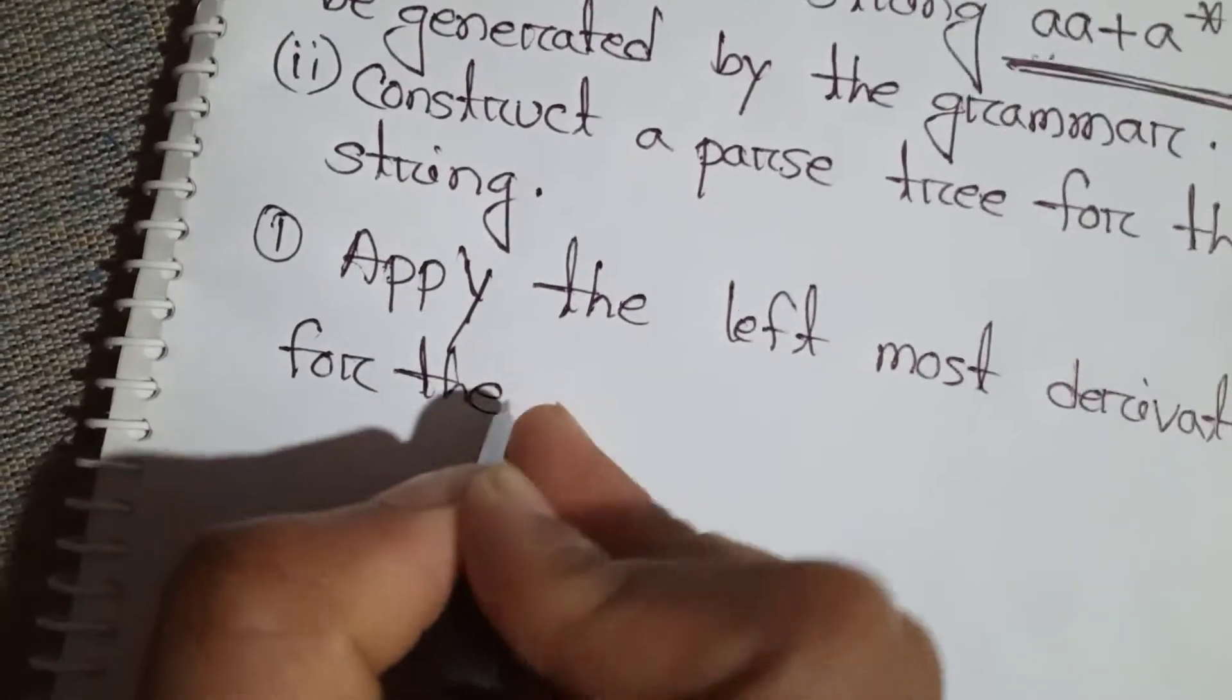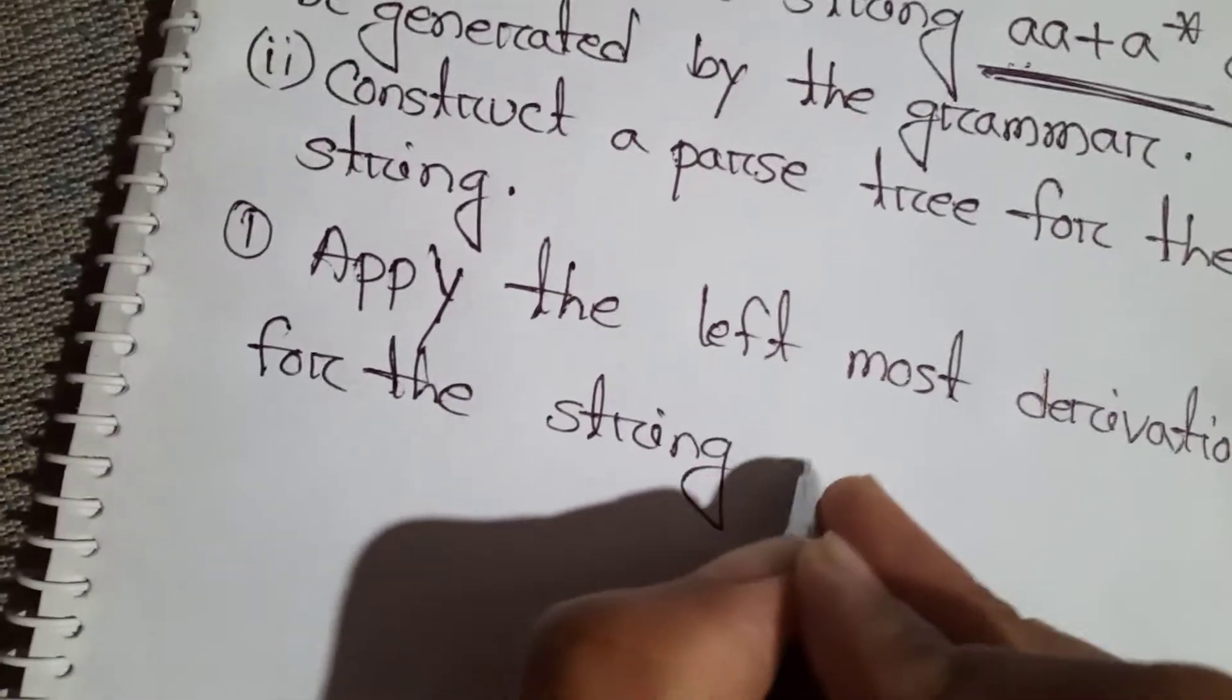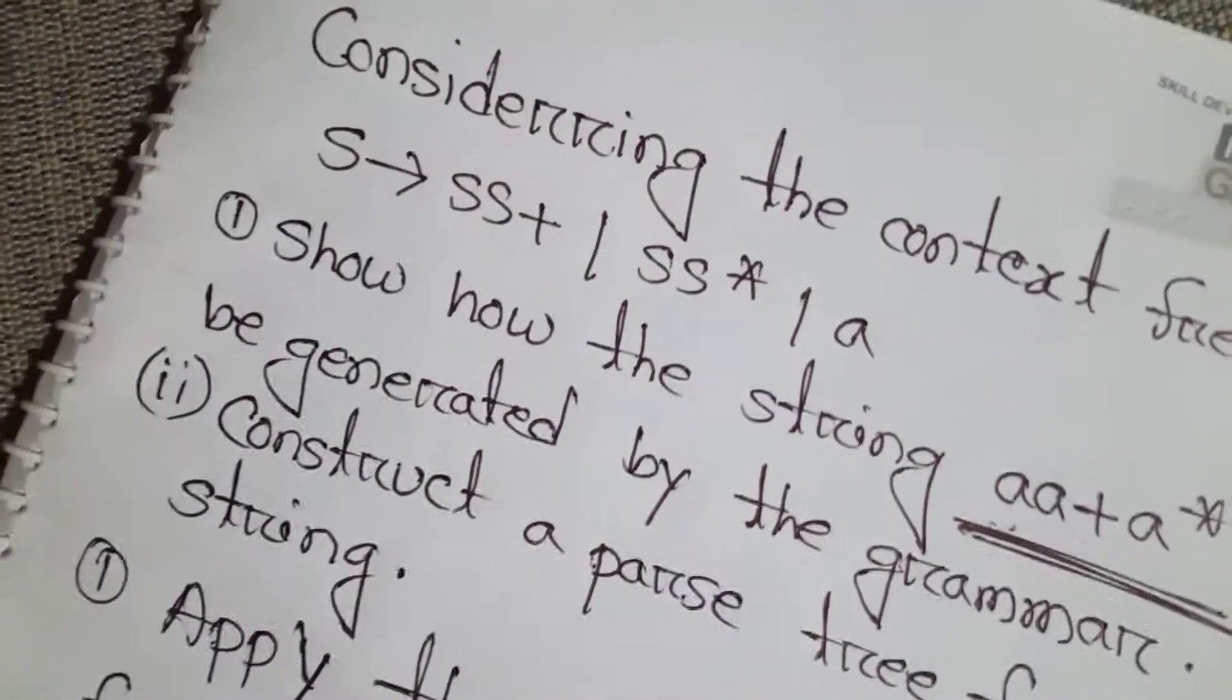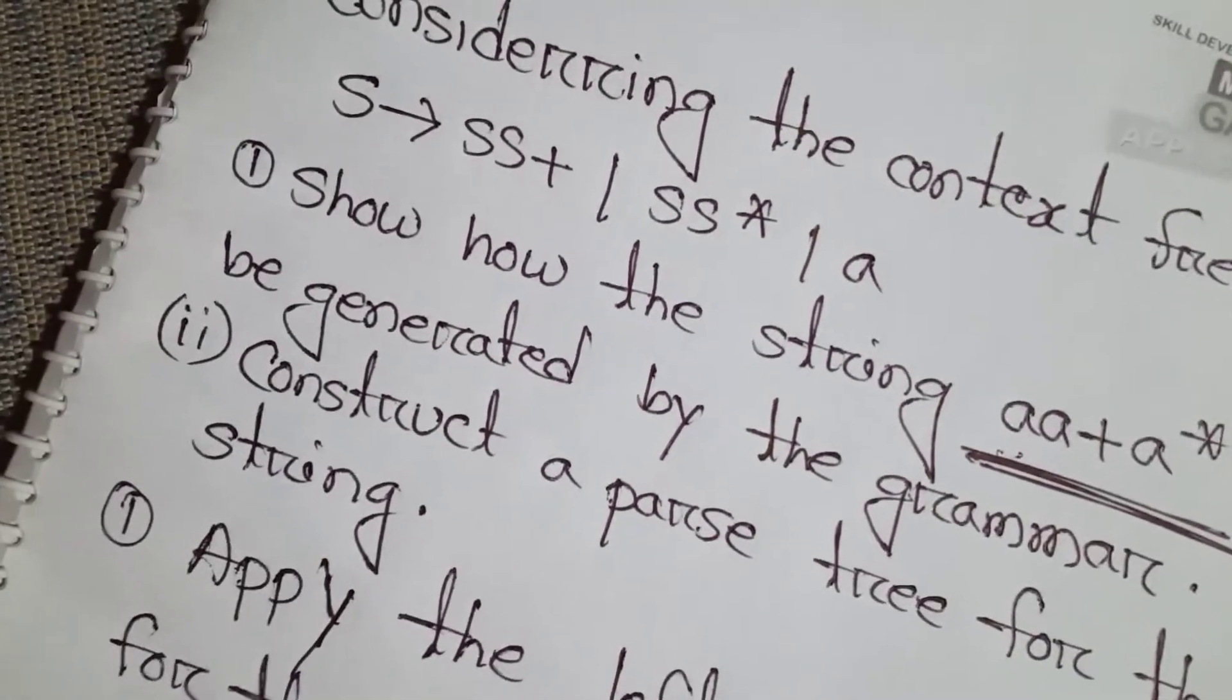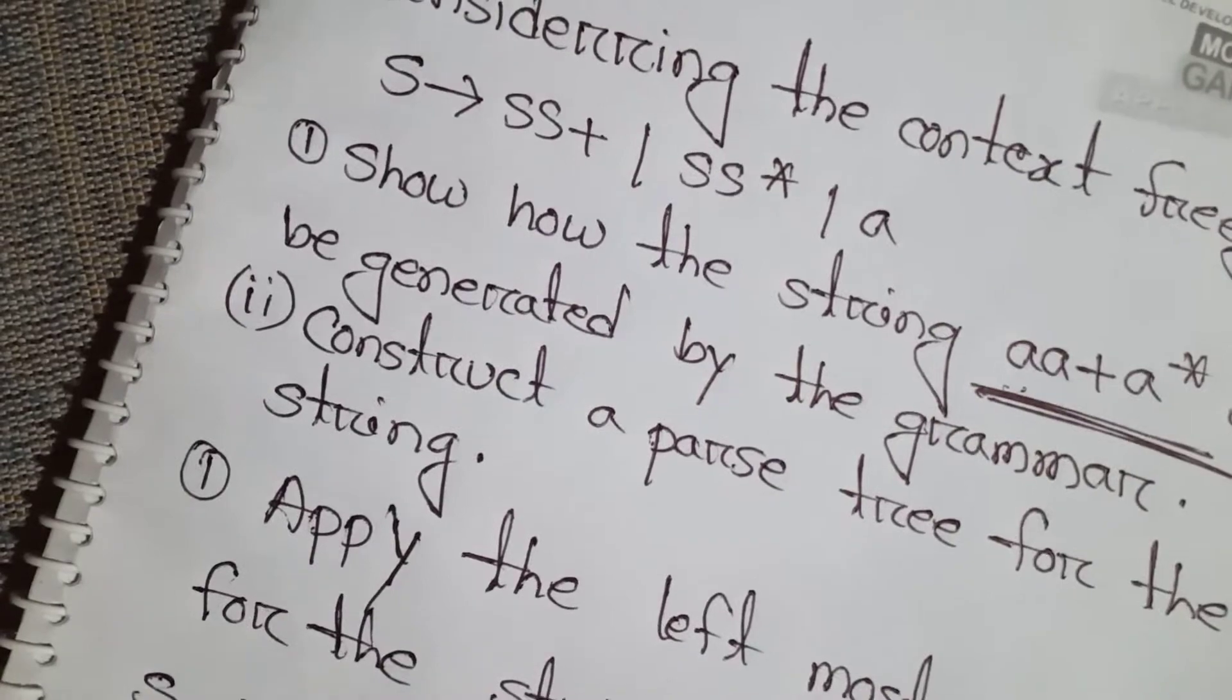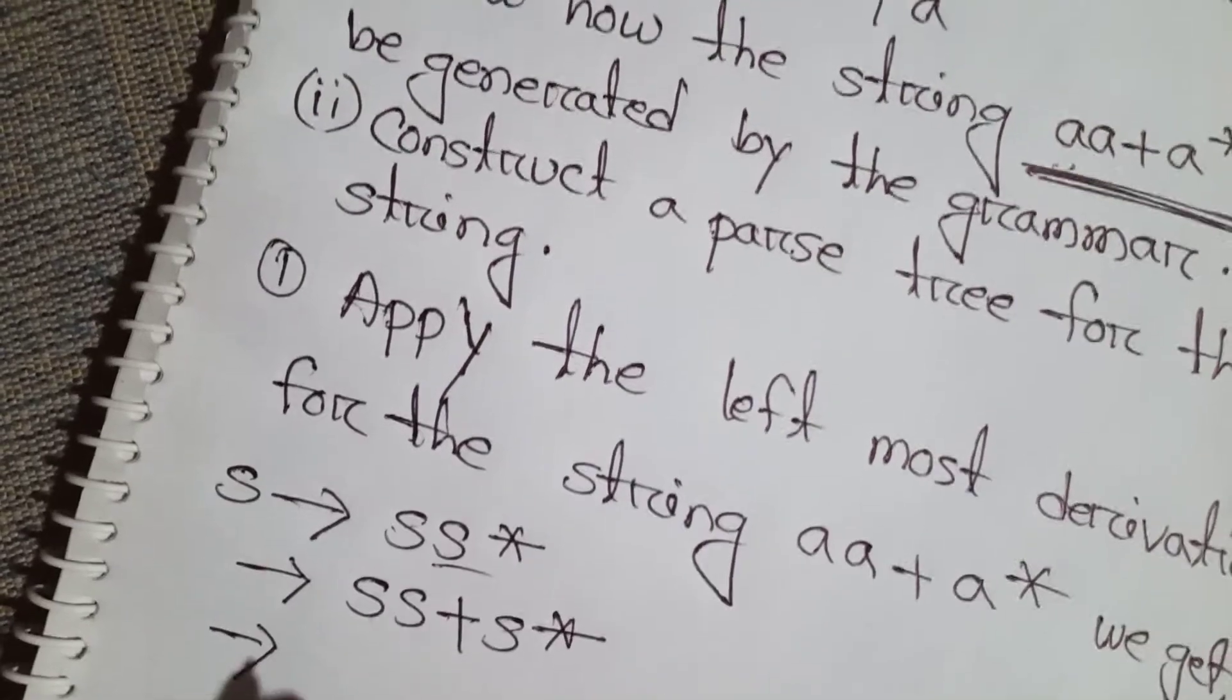For the string aa+a*, we get: we can write S → SS*. Given S → SS+, so we can write S → SS+. Here given SS*, and now S → a.